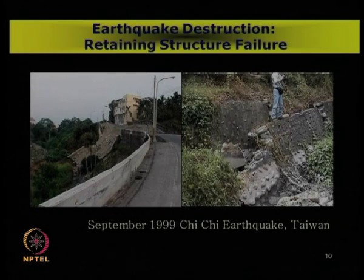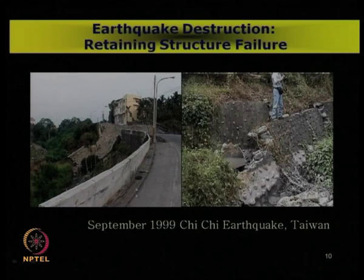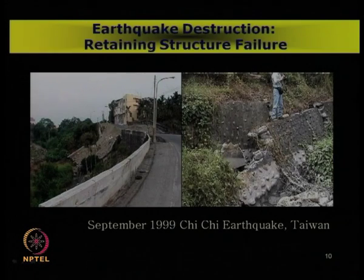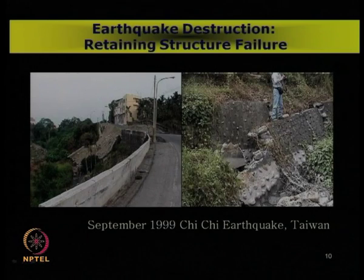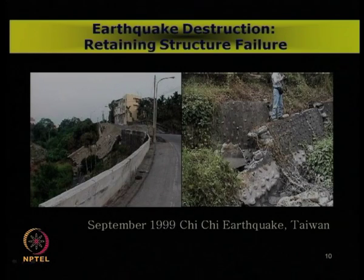We had also seen earthquake destruction on retaining structures. This is the portion of a retaining wall that withstood the September 1999 Chi Chi earthquake in Taiwan, but at some locations there was a failure of the retaining wall. This wall is constructed on a slope, and as we can see in the exaggerated view, the entire thing came down — the retaining wall failed and slope instability occurred under the earthquake condition of the Chi Chi Taiwan earthquake.